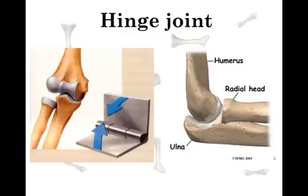A hinge is just like the hinge on a door — it allows for one-way motion. A hinge joint is found in your knee, and what's pictured here is the elbow. The elbow has the radius, the humerus, and the ulna — that's a hinge joint. Also your fingers, your phalanges, and your toes are hinge joints.